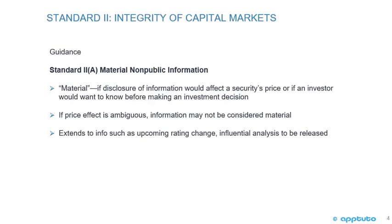Guidance for Standard 2A - Material non-public information. First, what is the definition of material? If disclosure of information would affect a security's price, or if an investor would want to know before making an investment decision. If the price effect is ambiguous, information may not be considered material. It also extends to information such as an upcoming ratings change or influential analysis to be released.